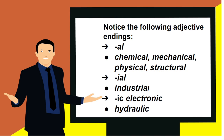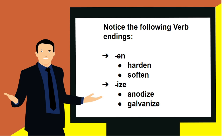Notice the following adjective endings: '-al' as in chemical, mechanical, electrical, physical, structural; '-il' as in industrial; '-ic' as in electronic and hydraulic. Notice the following verb ending: '-en' as in harden.